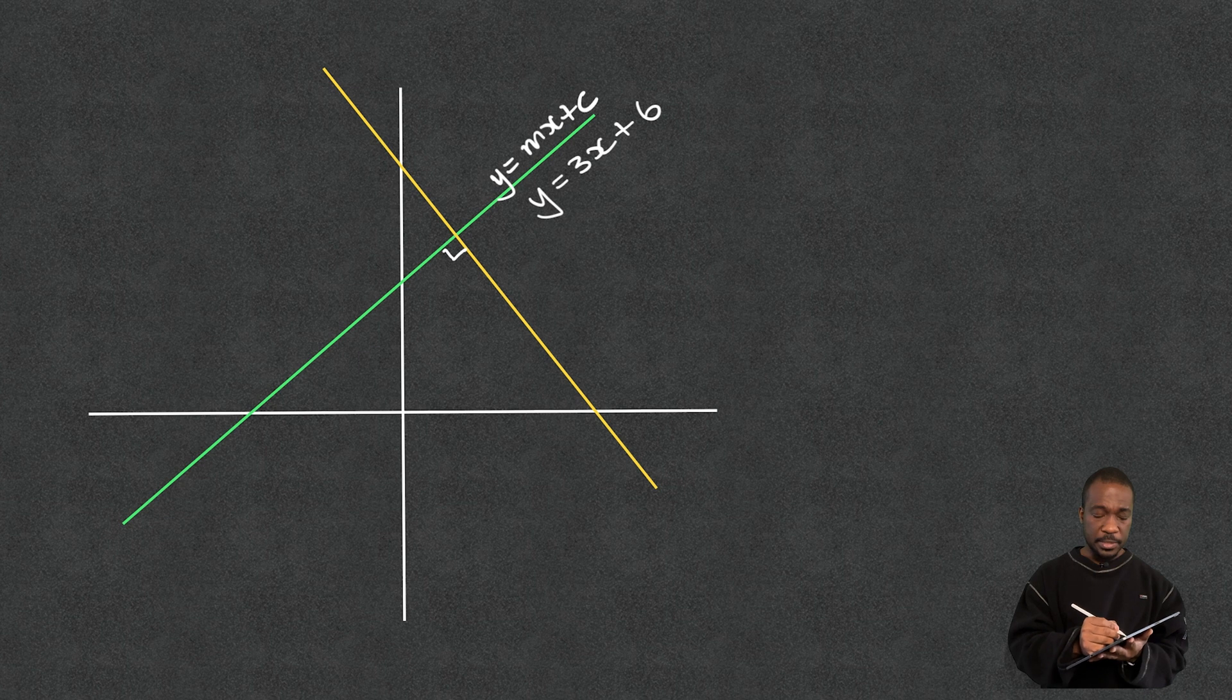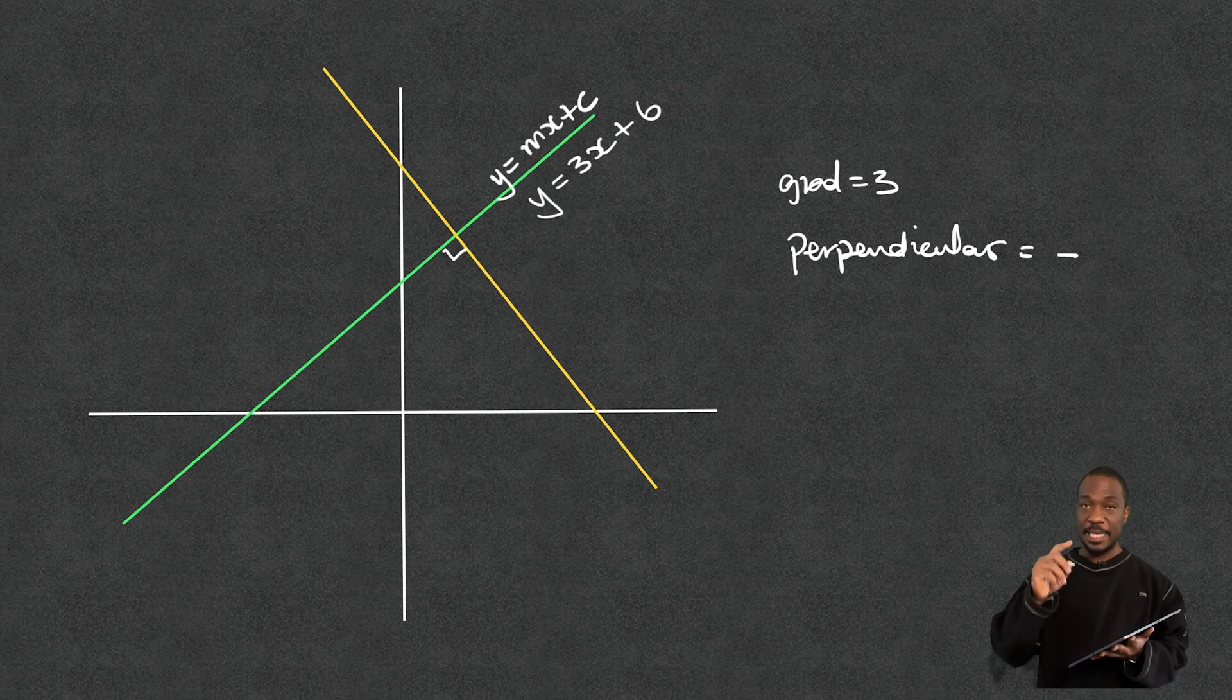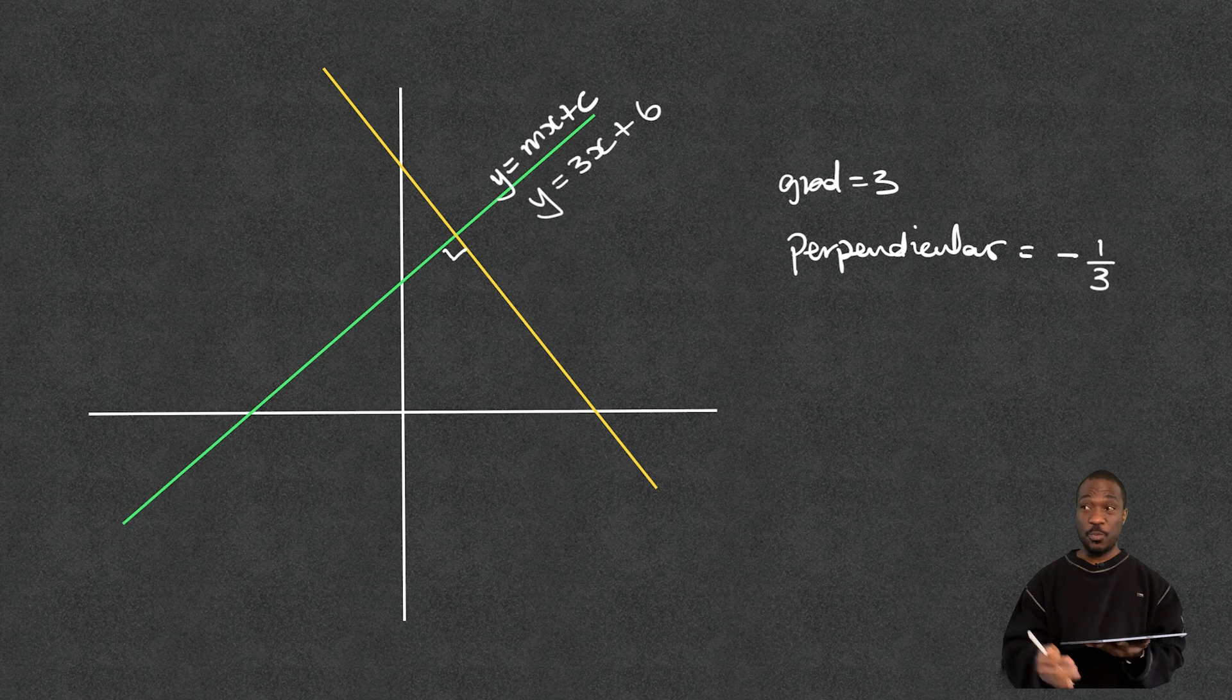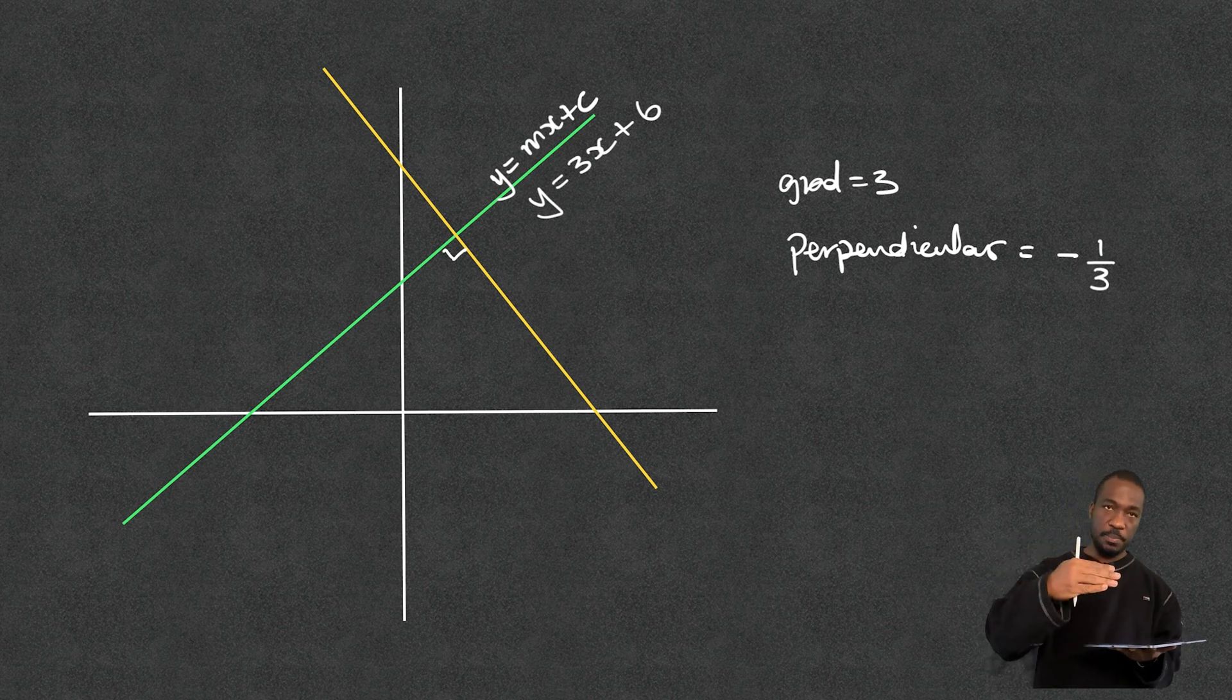If the gradient is 3, then for the perpendicular line, the gradient will be negative and then reciprocal means to flip over that 3. So it's going to be 1 over 3, 1 third like that. And that's it. So once you get your gradient, just change the sign, whether it's minus, you change it to plus. If it's a plus, you change it to minus and flip that right over. And that's it.